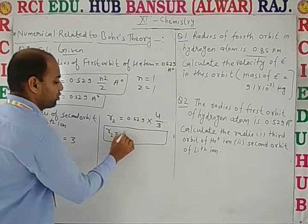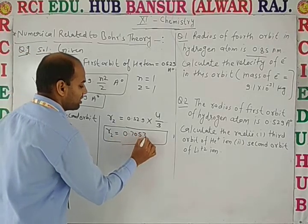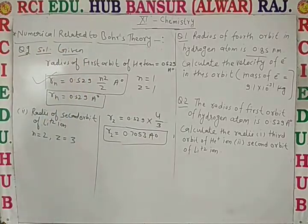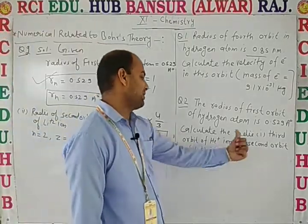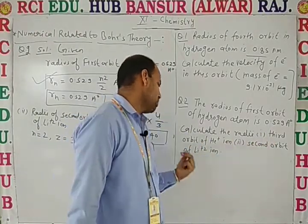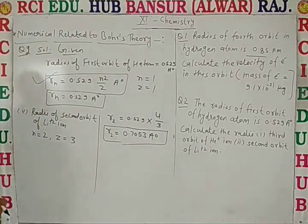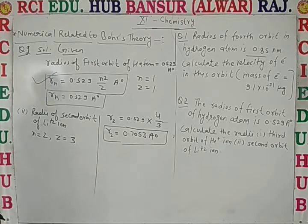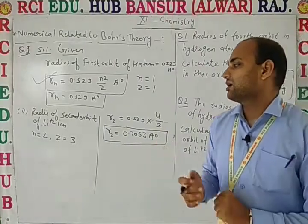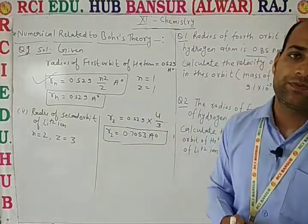The result is 0.7053 angstrom. That is the radius of the third orbit of He⁺ and the second orbit of Li²⁺. I hope you are able to understand the explanation in this video.